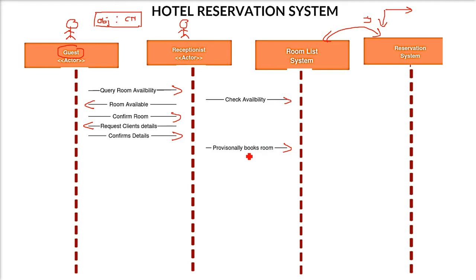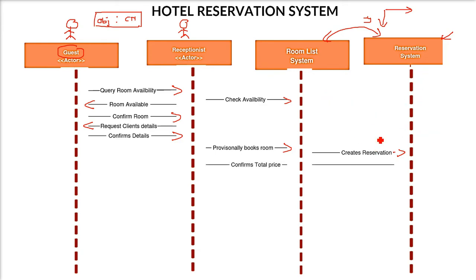Here, the reservation system comes into play for the first time — it creates a reservation. Since this is just provisional, it still goes to the reservation system to create a new reservation for the new guest. Now the reservation system will tell the price, and the receptionist will see the price and advise it back to the customer.